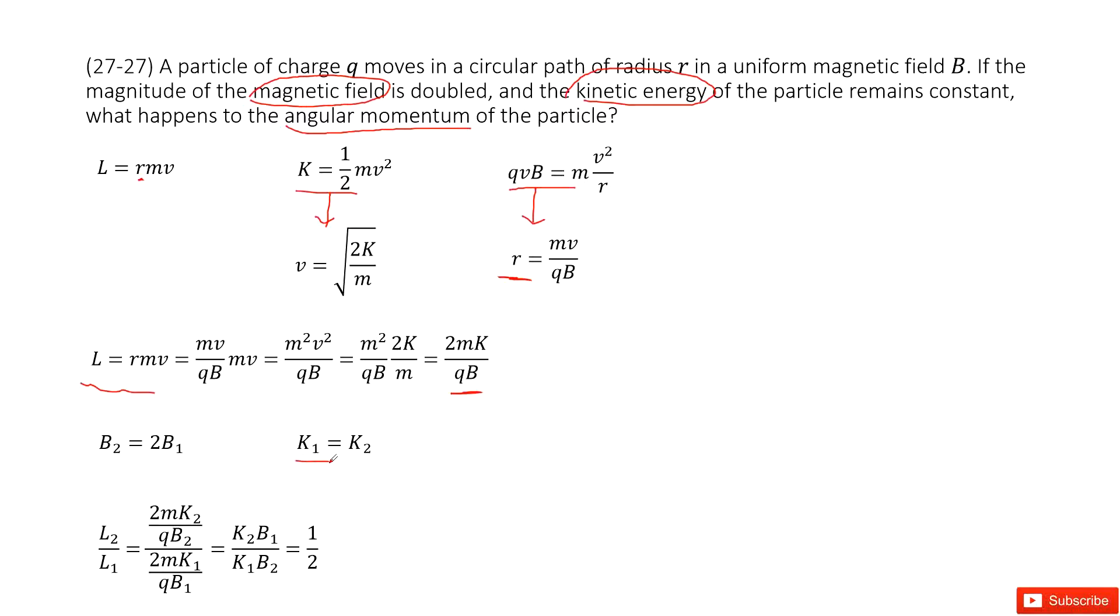the kinetic energy is constant, so K1 equals K2. And then the initial magnetic field is B1, the final becomes twice, it's doubled, so 2 times B1. And then you can get the ratio for angular momentum L2 over L1 equals 1 over 2. Thank you.